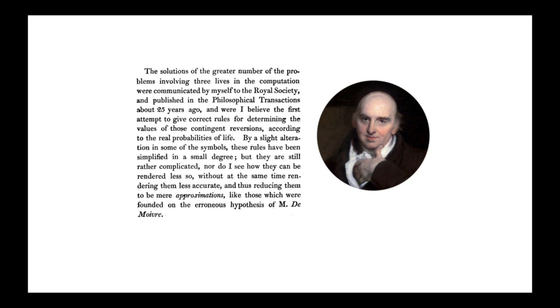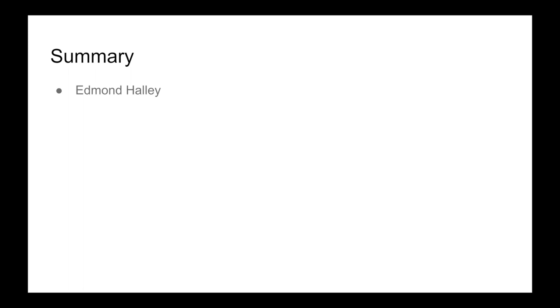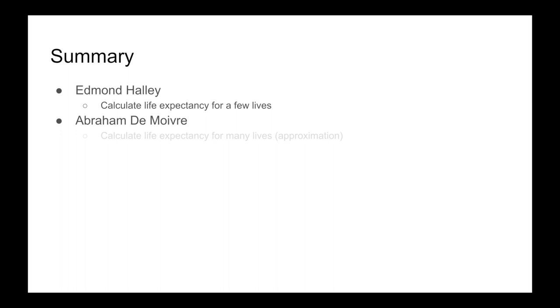William Morgan was a little more critical of de Moivre's approximation techniques and made them much more accurate — which is probably why he's considered the father of actuarial science and not Abraham de Moivre. In summary: Edmund Halley calculates life expectancy for a few lives; Abraham de Moivre calculates it for many lives as an approximation; James Dodson builds an insurance company from this.